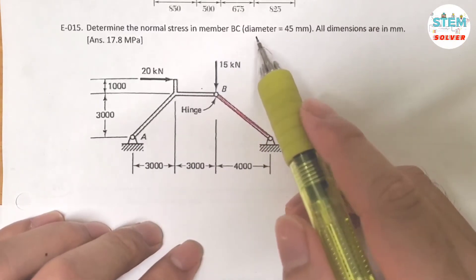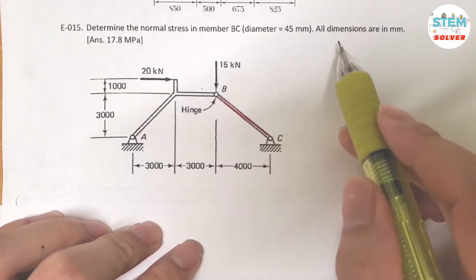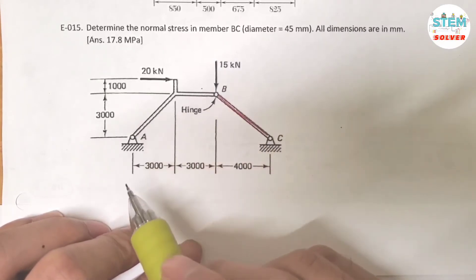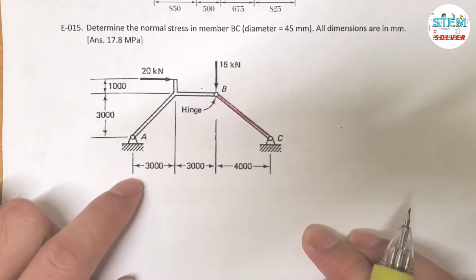The diameter is equal to 45 mm. All dimensions are in mm. So here's the frame diagram and I'm going to draw the free body diagram for this one.